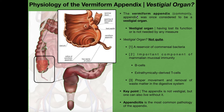Vermiform is a term that basically means the shape of a worm. You can see the appendix hanging off the bottom of the initial part of the large intestine called the cecum. Going back to digestive physiology, the terminal part of the small intestine is called the ileum. Contents in the ileum move from the ileum into the cecum of the large intestine before being moved up through the ascending colon. The appendix hangs off the bottom of the cecum.